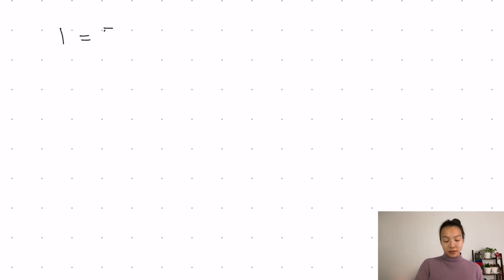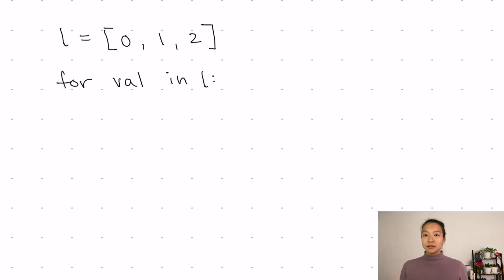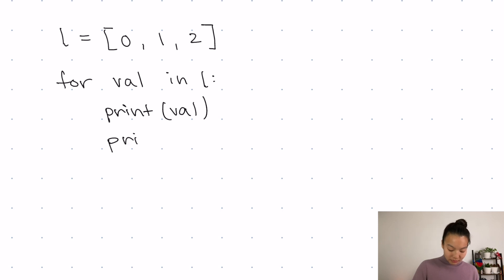So let's go through a different example. We've looked at strings, but actually we can iterate through any sequence using a for loop — we can iterate through lists, tuples, and even dictionary keys. We can also do iteration through sets. So let's look at a list. L is equal to the list [0, 1, 2]. And then I'm going to say: for val in L, print val, and then print val times two. And then at the very end, we're going to print done again.